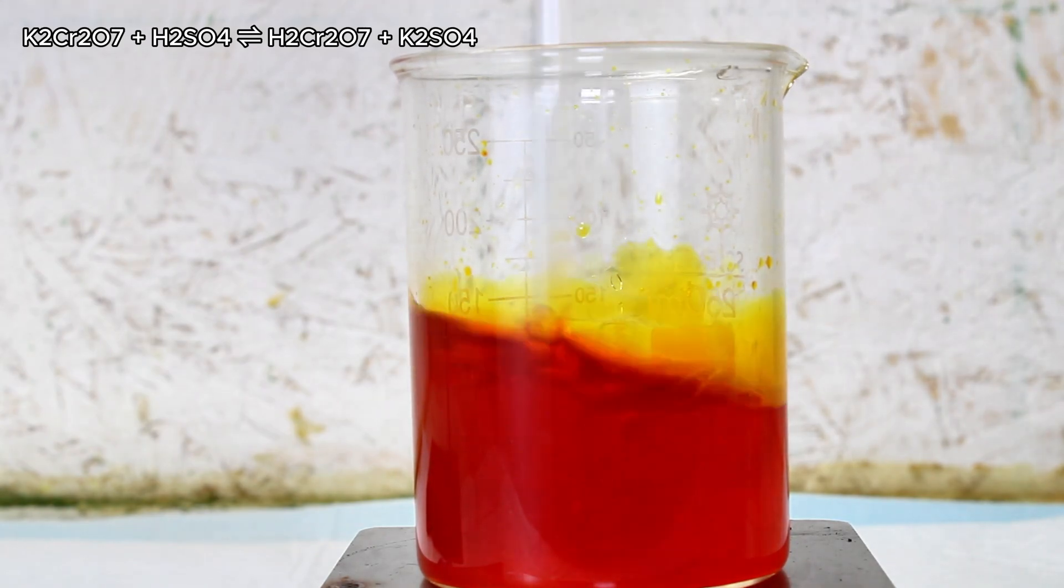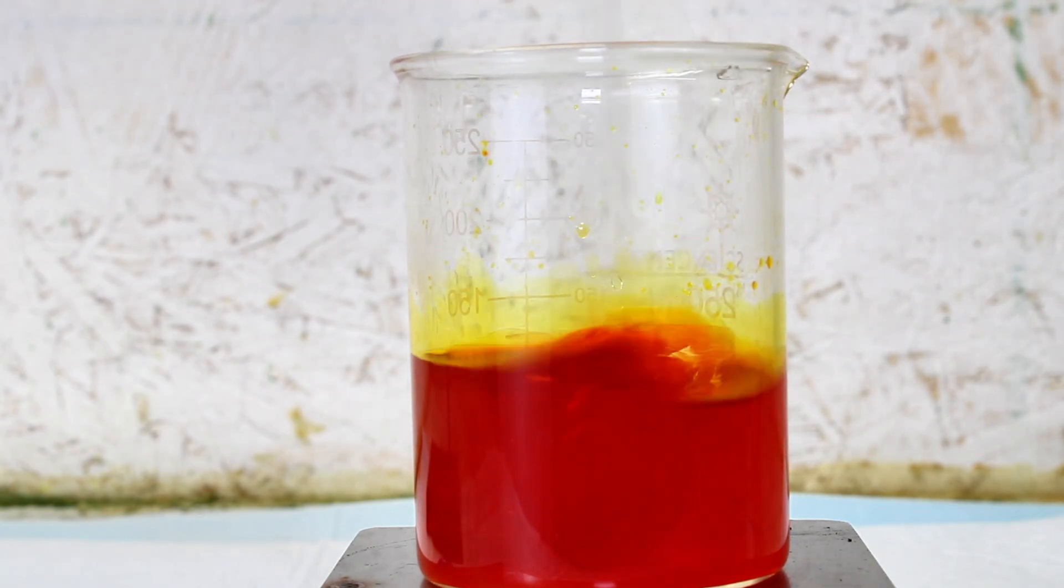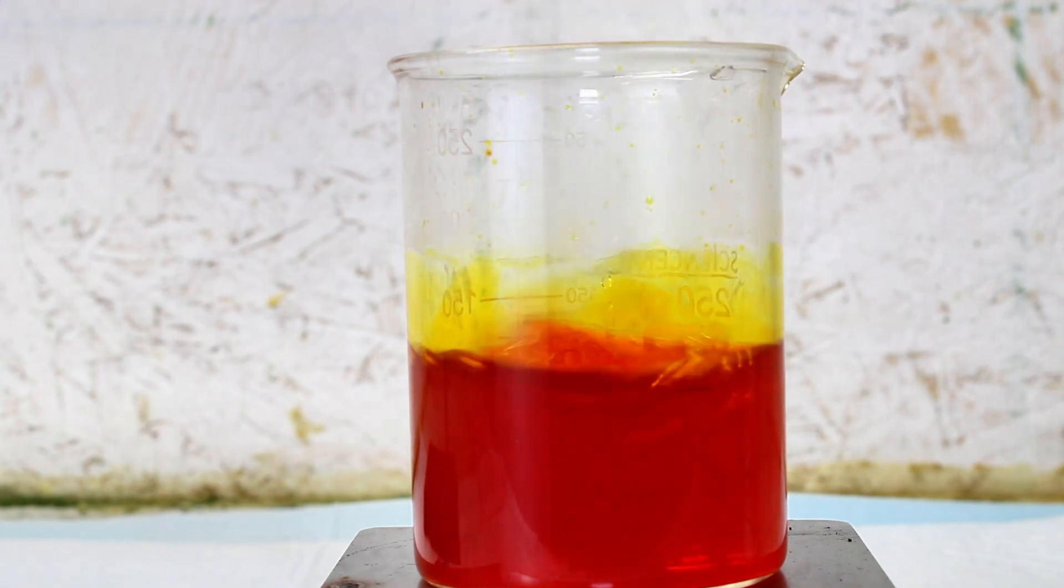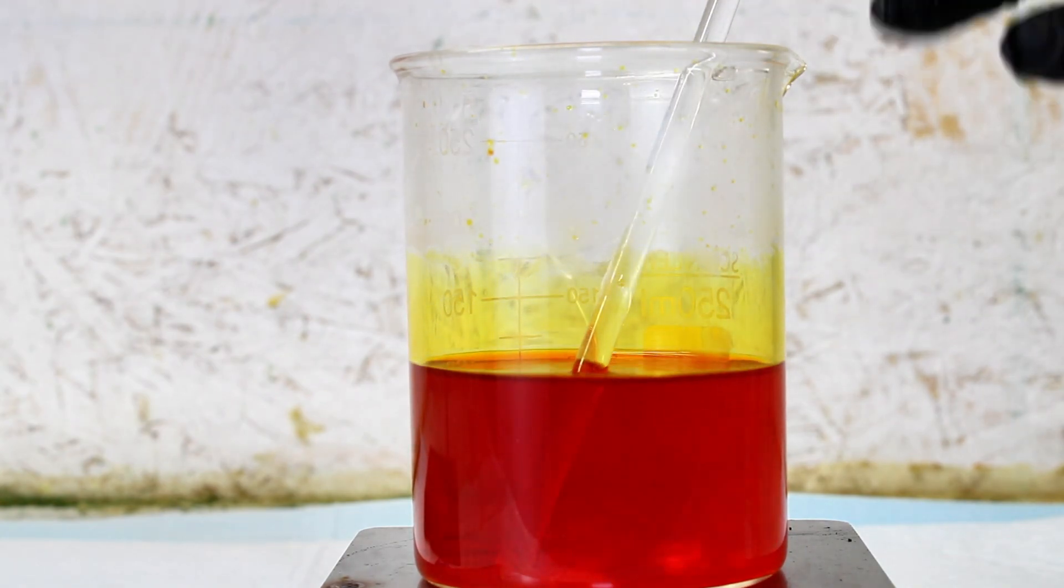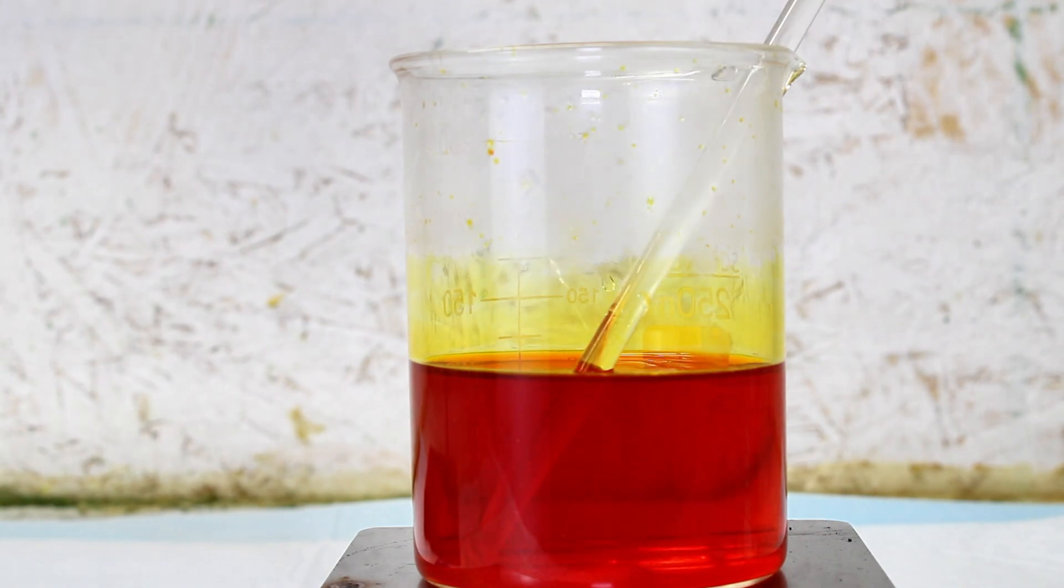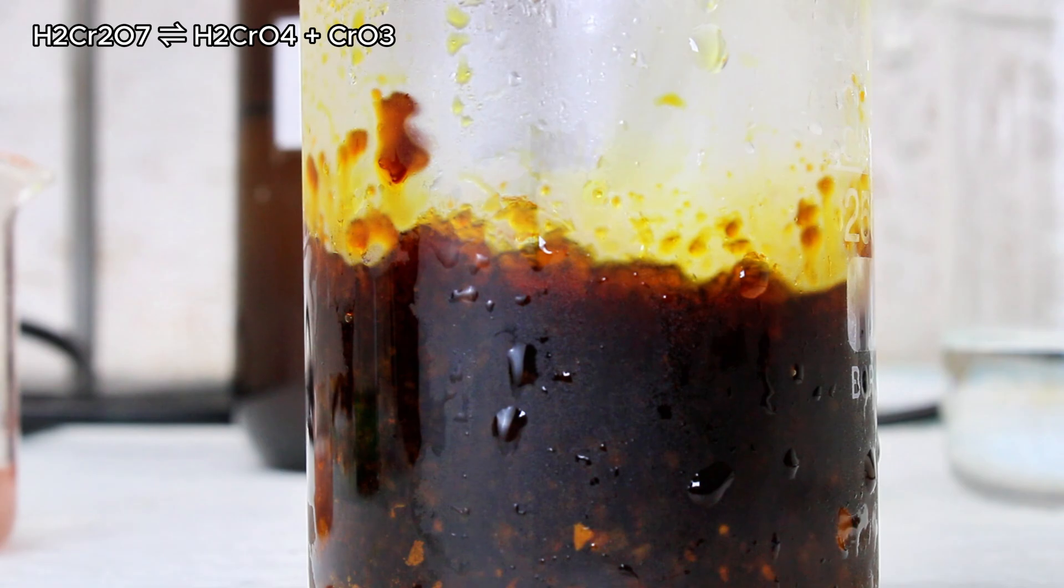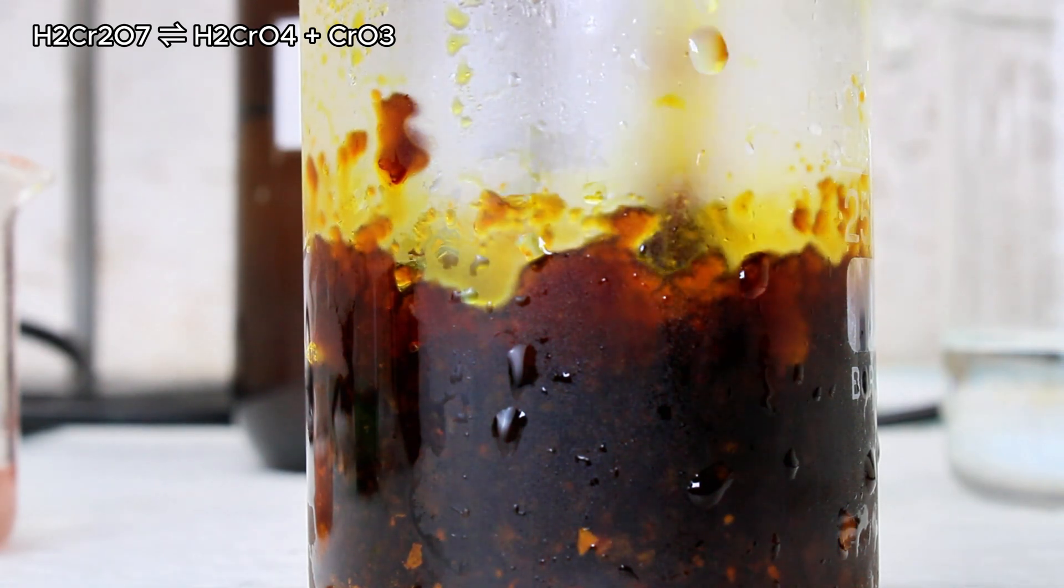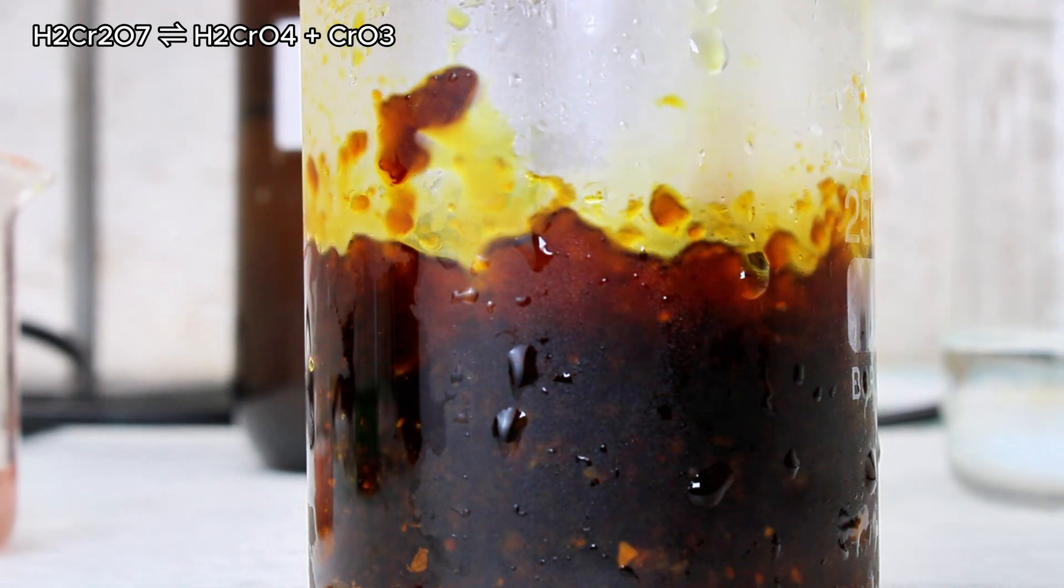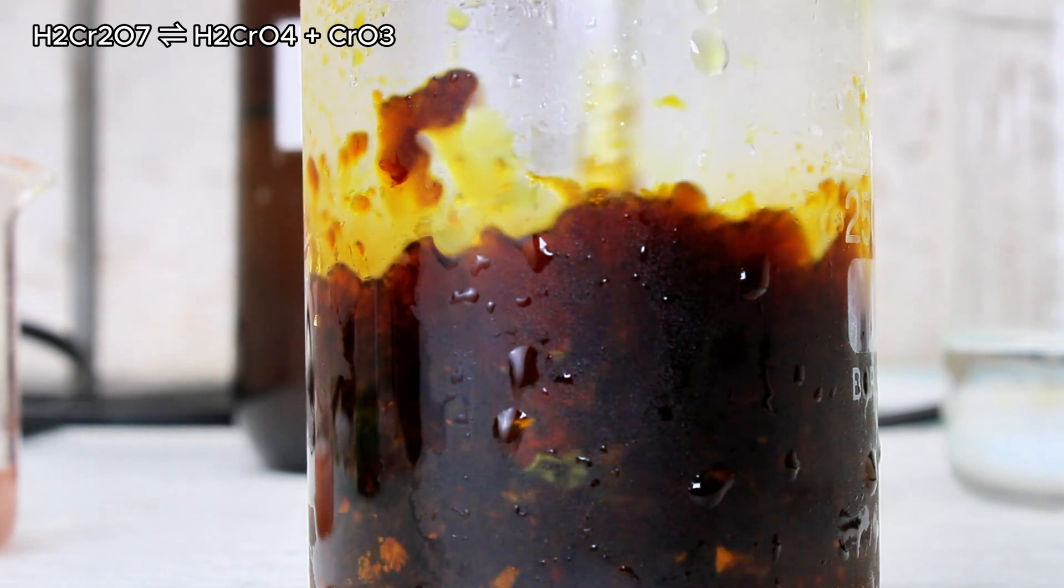This forms the horrifying chemical chromic acid, which is a blood red color and used extensively in chrome plating, much to the misfortune of the chrome plating workers. If you leave this sitting around long enough, eventually an extremely dark red and almost black solid will precipitate out. And that is chromium trioxide.